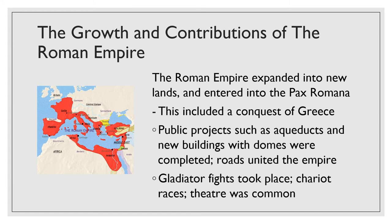Rome expanded into new lands, including Greece. Later on, there would be several emperors after Octavian — who changed his name to Augustus Caesar. Famous ones include Caligula and Nero, among several others. We could do an entire video on Roman emperors.